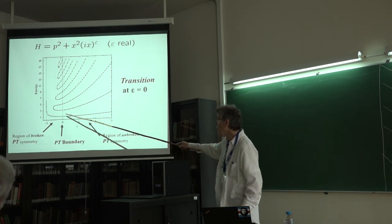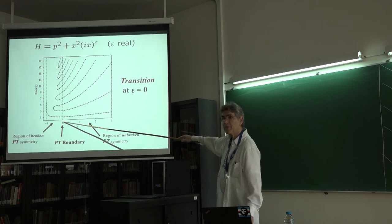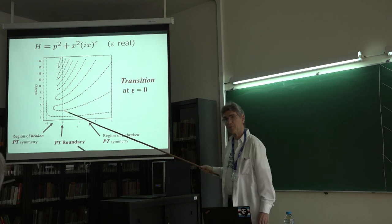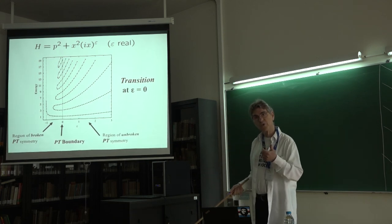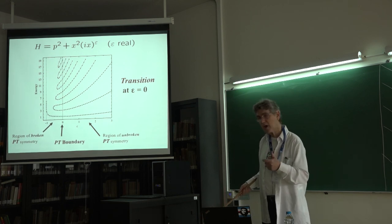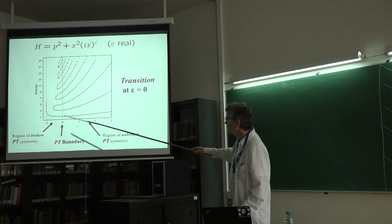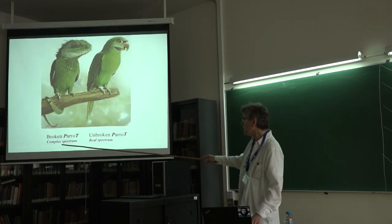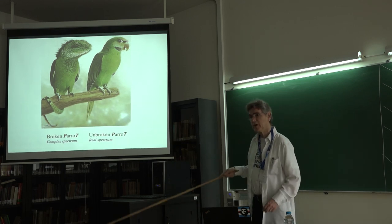You notice something happens when epsilon goes negative. This is the PT boundary at epsilon equals zero, where the harmonic oscillator lives. The region of unbroken PT symmetry is where epsilon is positive: all eigenstates of the Hamiltonian are also eigenstates of PT. In the broken PT symmetry region, eigenstates of the Hamiltonian are not eigenstates of PT, and eigenvalues become degenerate and disappear into the complex plane. This is a pitchfork singularity — an exceptional point.